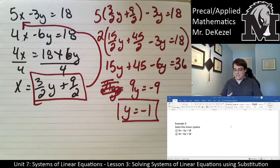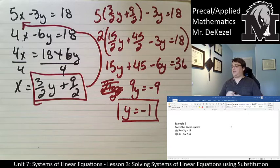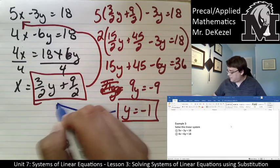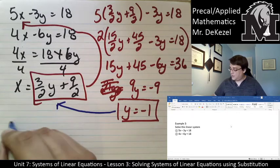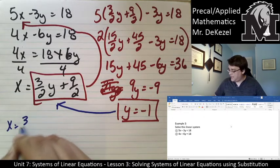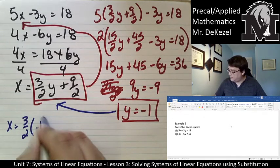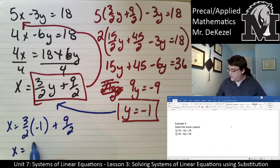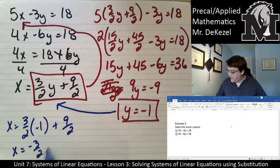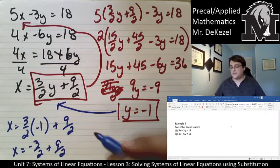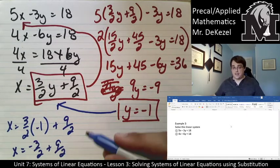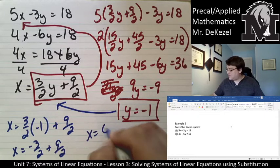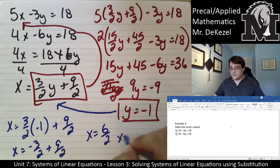I can then take that negative 1 and plug it into my original rearranged equation right here. So x will then equal 3/2 multiplied by negative 1 plus 9/2. x is equal to negative 3/2 plus 9/2. That means that it's 6/2. So x is equal to 6/2. x equals 3.